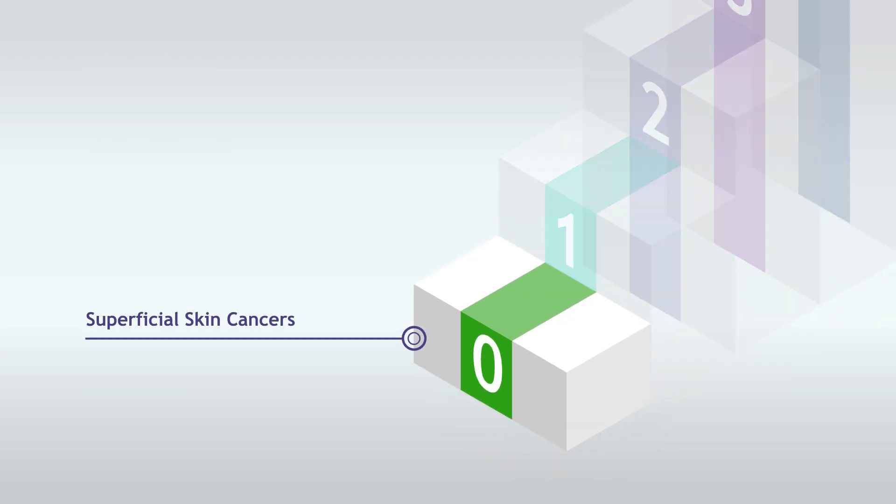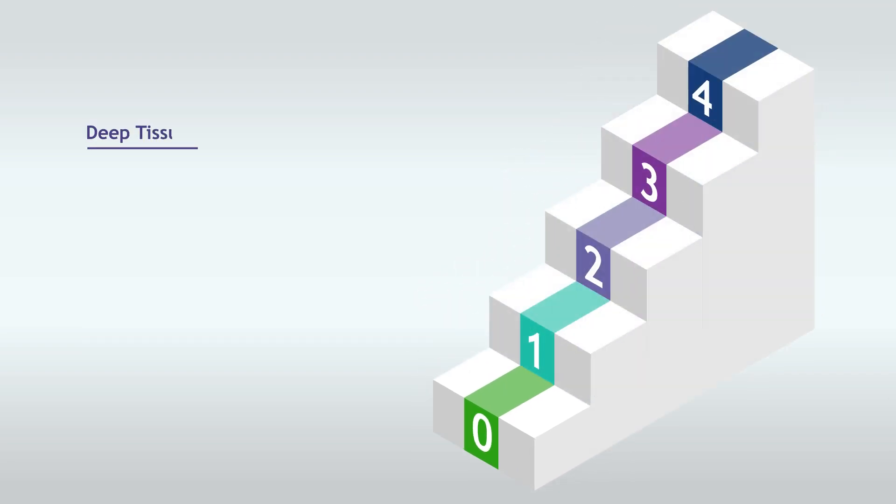Most superficial skin cancers, like basal cell carcinoma, don't spread and are therefore easily removed. However, others, such as melanoma, may require further treatment depending on their stage.